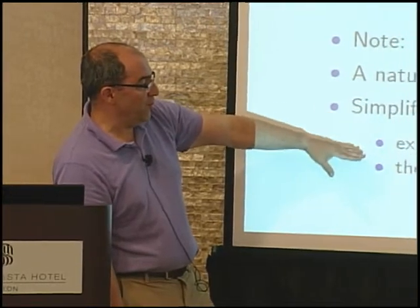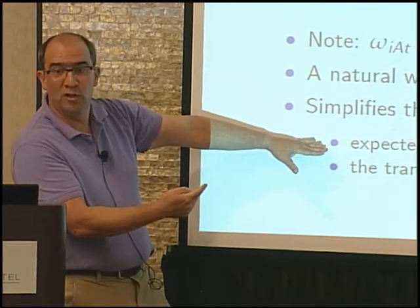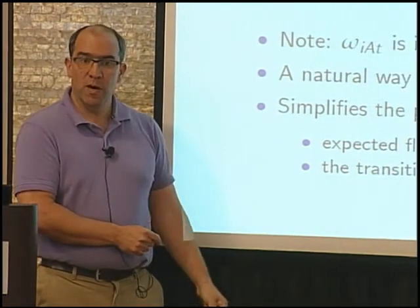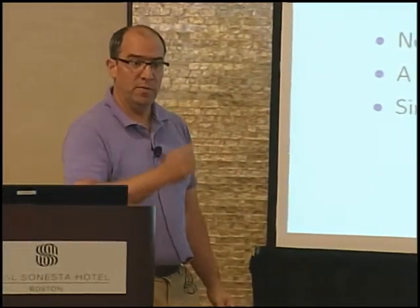The inclusive value will play two roles. First, it allows us to say that expected utility depends only on this statistic. But to really simplify the problem, I need an additional assumption about the transition probability. I need that the distribution of next period's inclusive value, conditional on the full vector of prices, is the same as if I only condition on today's inclusive value. So two vectors of prices that are different but yield the same inclusive value have the same transition to next period.